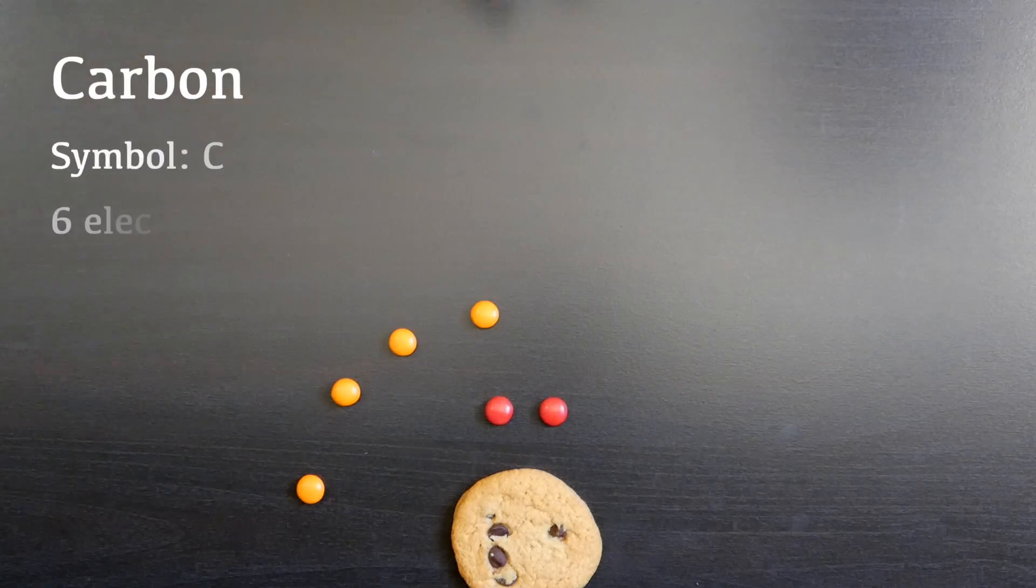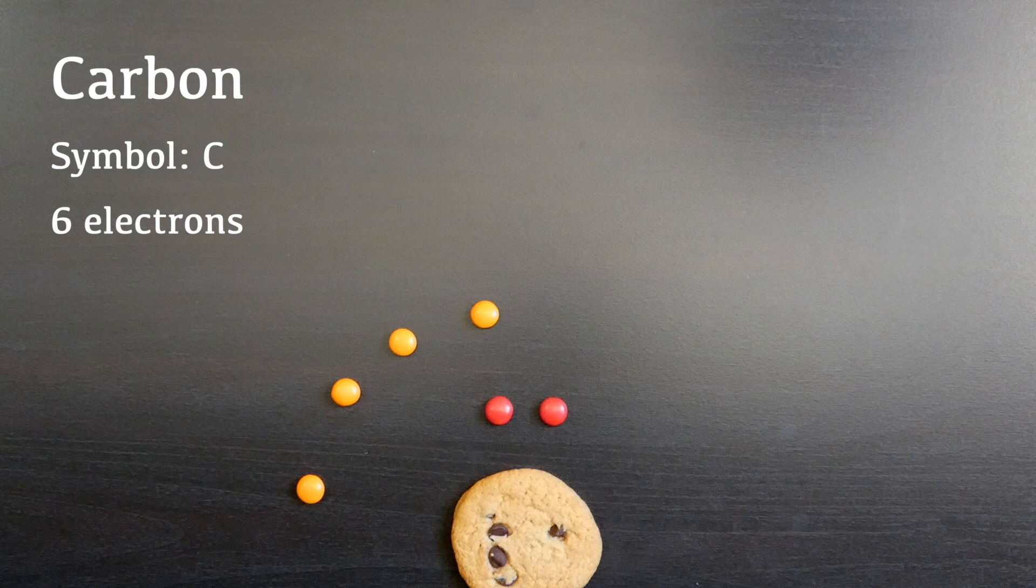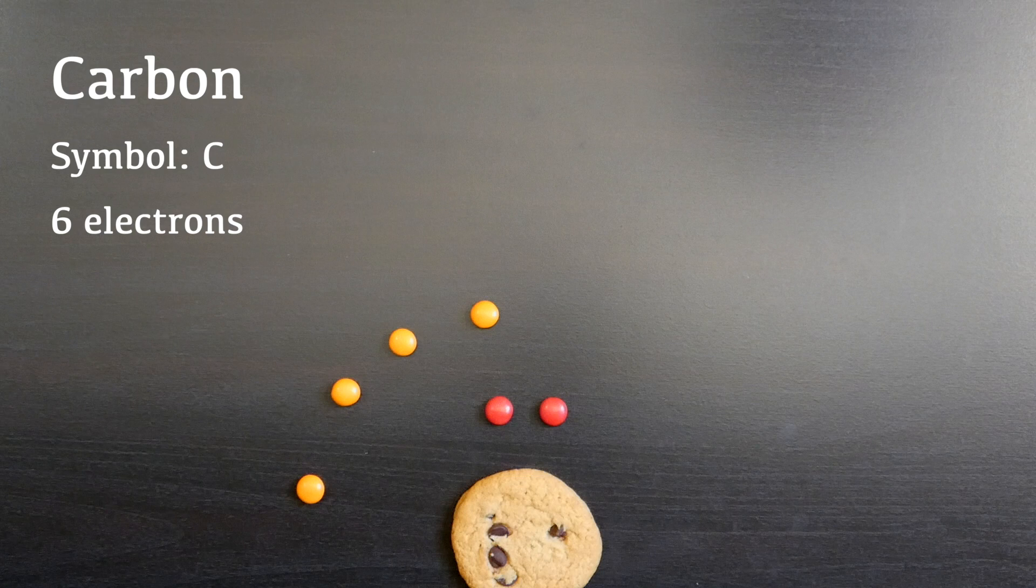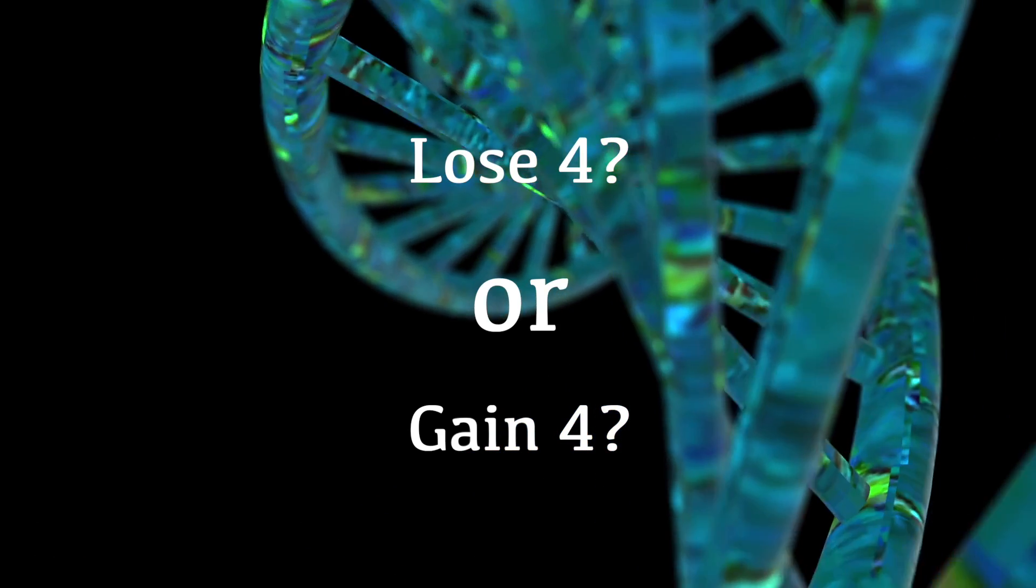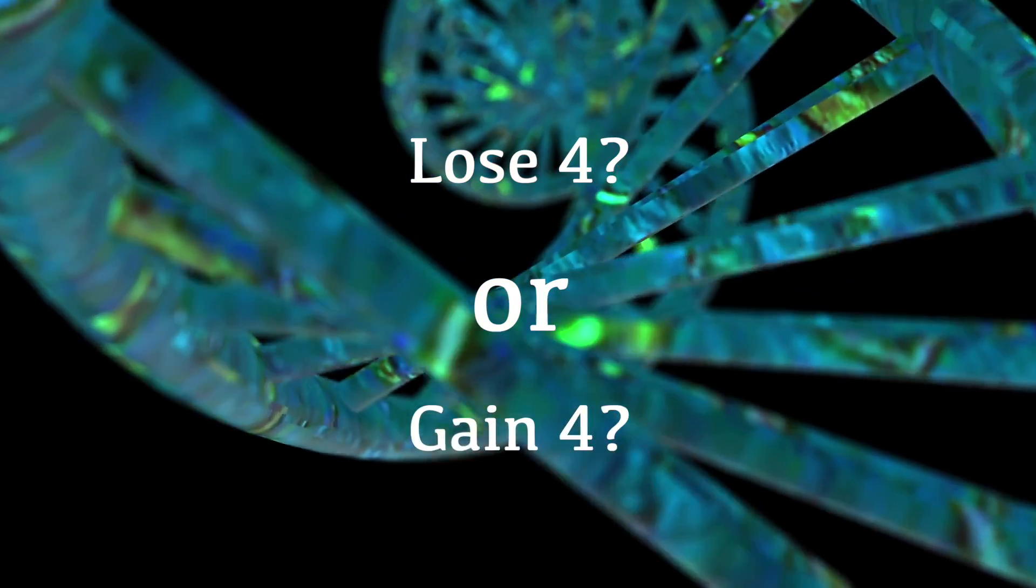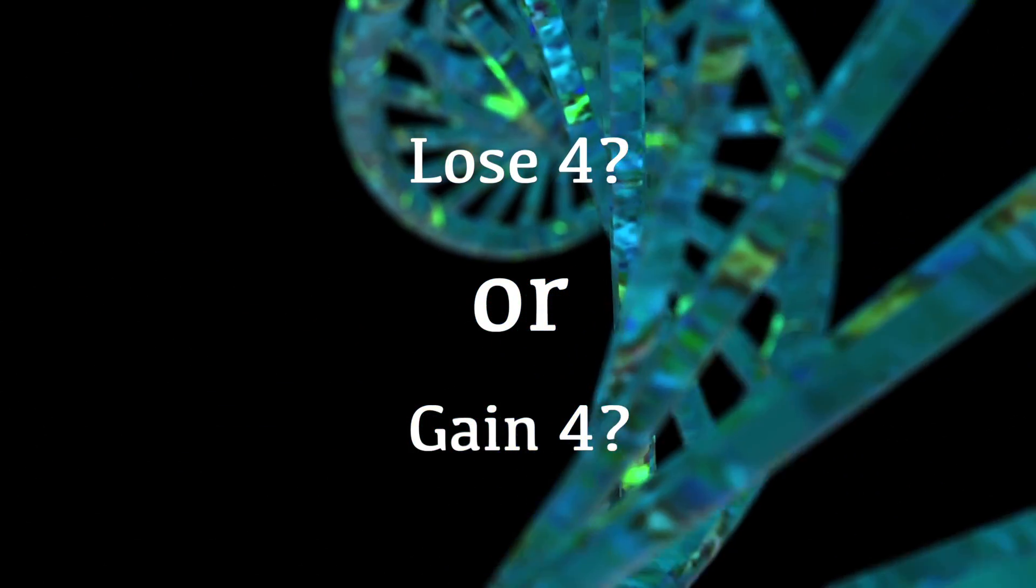Next, we have a fairly common element you have probably heard of before. This is carbon. Its outermost shell is exactly half full. It can lose four electrons, or gain four electrons with equal ease, and both situations will stabilize it.